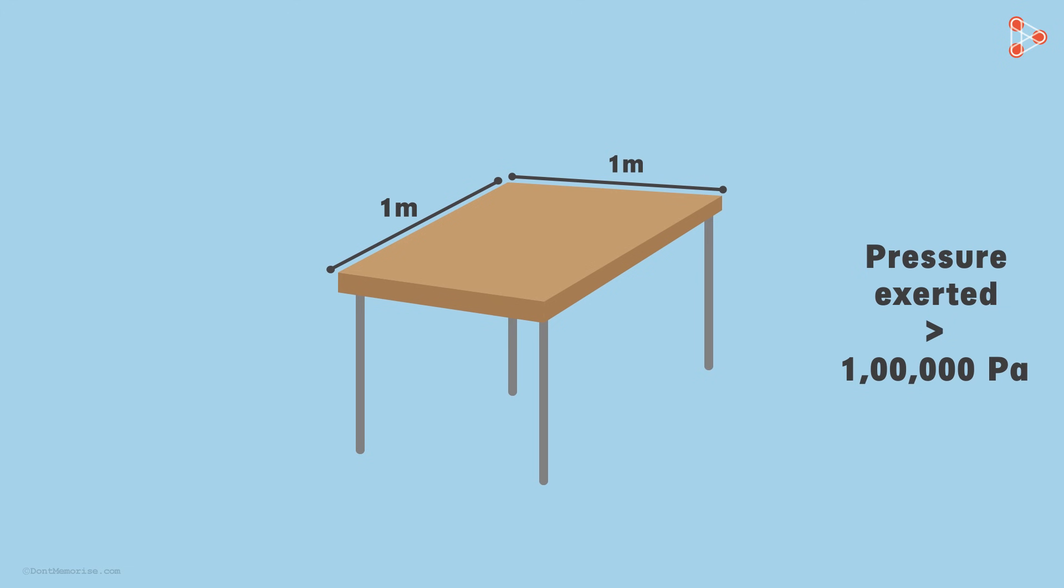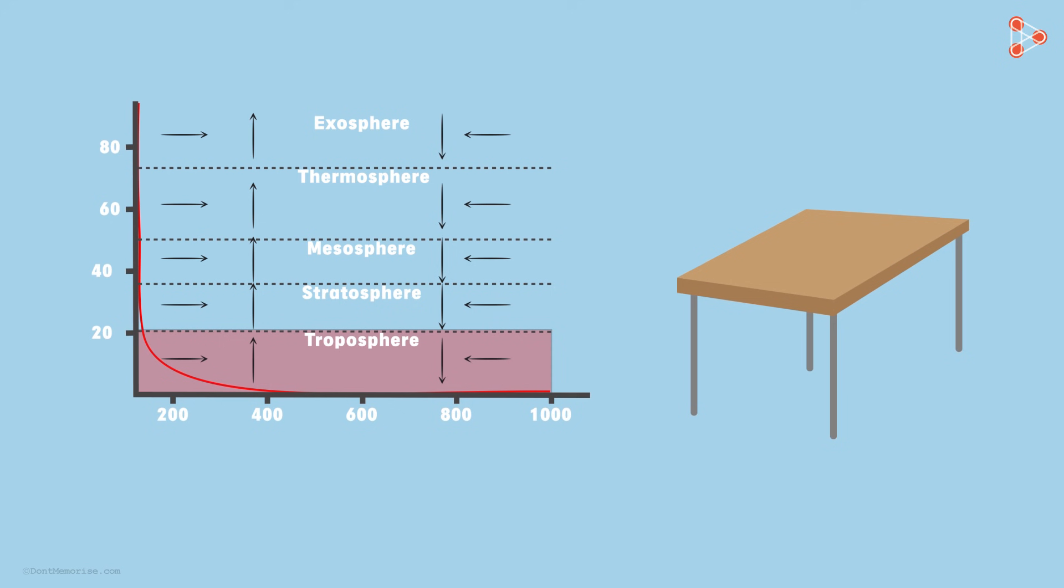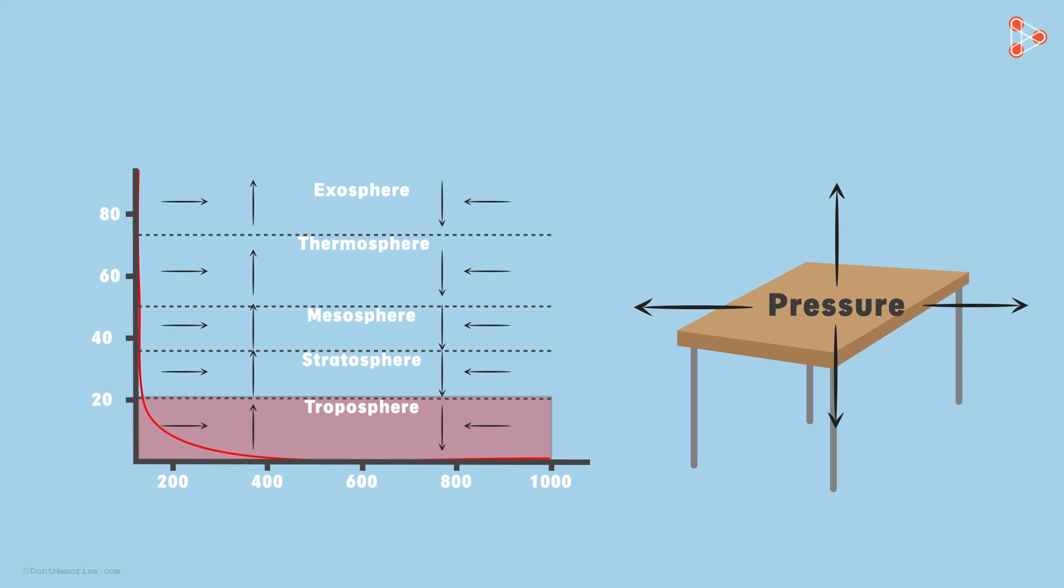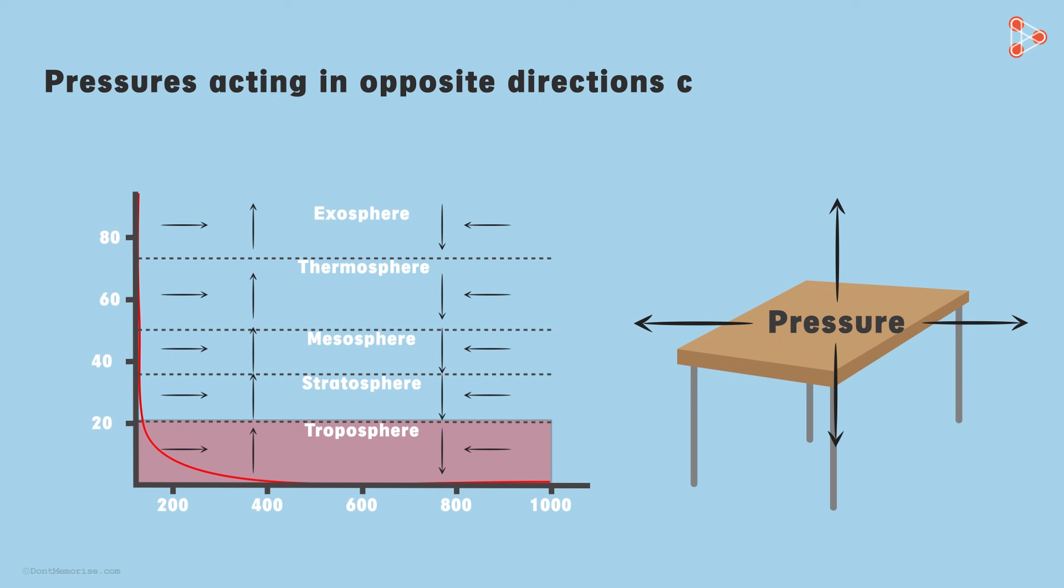A little while ago, we said that the pressure exerted at points above the earth's surface is equal in all directions. So the pressure at every point on the table is the same in all directions. That is, if downward pressure is pushing the table surface with a great force, then the upward pressure is also pushing it in the upward direction with the same force. Both forces are balanced and the table does not collapse. As I said, pressure is not only acting in these two directions. It is acting on the surface in all directions. Pressures acting in opposite directions cancel each other out.